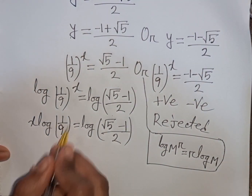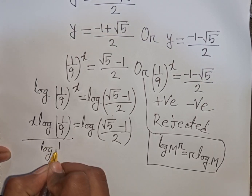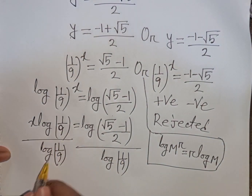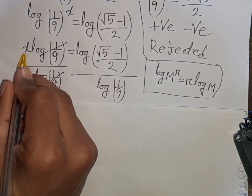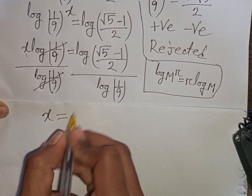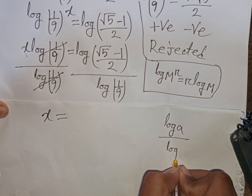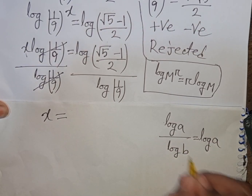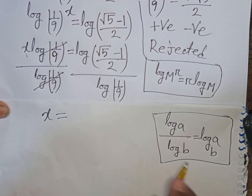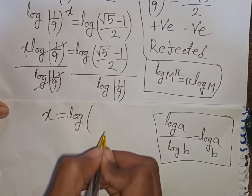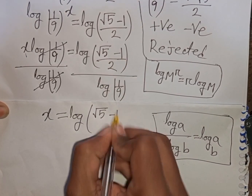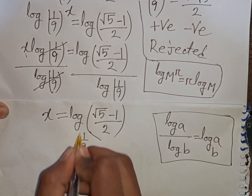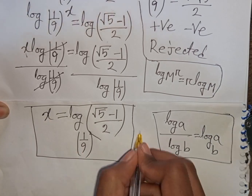We need the value of x, so divide both sides by log(1/9). The log(1/9) terms cancel. Applying the formula log a divided by log b equals log base b of a, we get x equals log base (1/9) of (square root of 5 minus 1) divided by 2. This is the final answer.